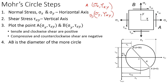For Point A on the x-face, we have a tensile stress (positive) and a counterclockwise shear stress (negative), so we go right to σx and then down by τxy — that gives us Point A at (σx, −τxy). For Point B on the y-face, σy is positive tensile and the shear stress is clockwise (positive), so Point B is plotted at (σy, +τxy). These two points form the diameter of the circle.